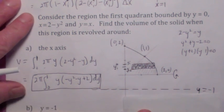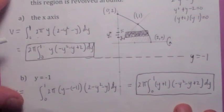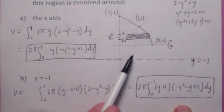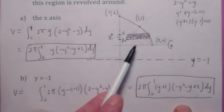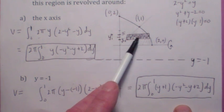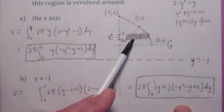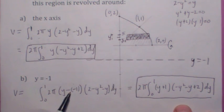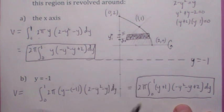How about revolving along the line y equals negative 1? If you revolve around y equals negative 1, the distance to the axis of revolution becomes different. You're still adding from 0 to 1, but the distance from the y-coordinate to the line y equals negative 1 would be y sub i minus negative 1, which gives you y plus 1. The length of the rectangle is still right minus left: 2 minus y squared minus y.